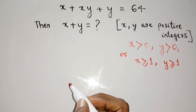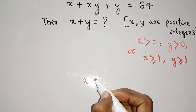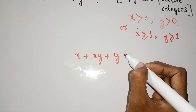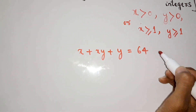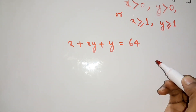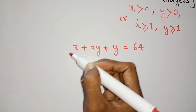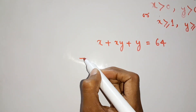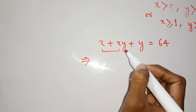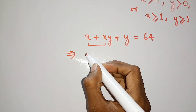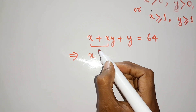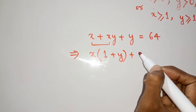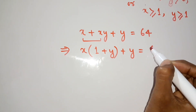We can take this equation x plus xy plus y equals 64 and use several methods to solve it. First of all, we have to factorize the left-hand side. We take the first two terms and factor out x, giving us x times (1 plus y) plus y equals 64.